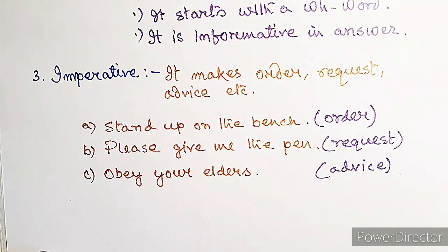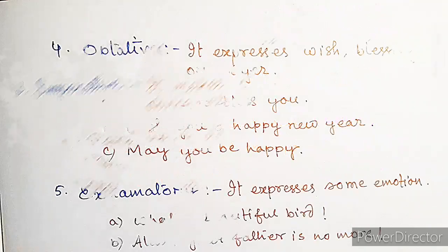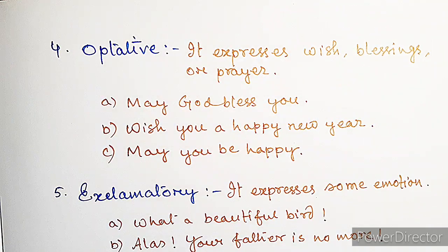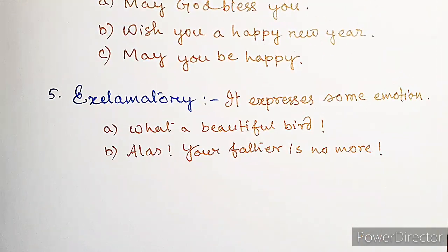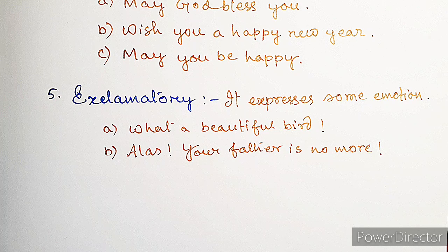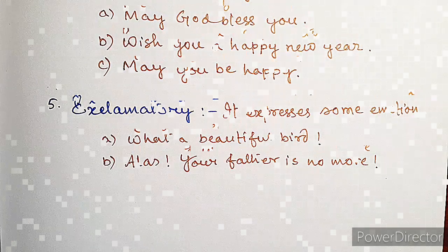An optative sentence expresses a wish, blessing, or prayer — for example, 'May God bless you', 'Wish you a happy new year', 'May you be happy.' An exclamatory sentence expresses some emotion — for example, 'What a beautiful bird!' and 'Alas, your father is no more.'